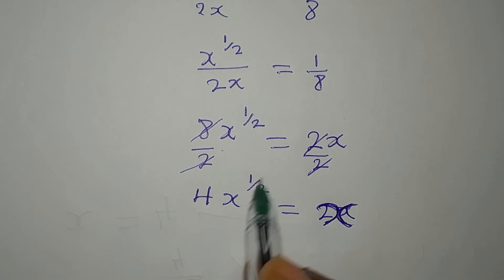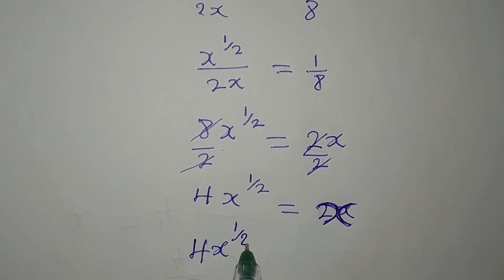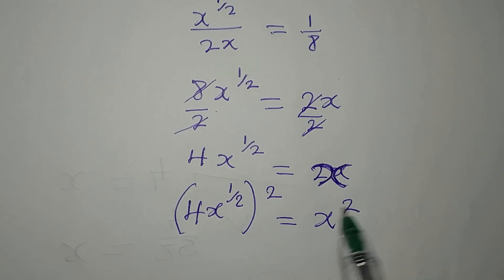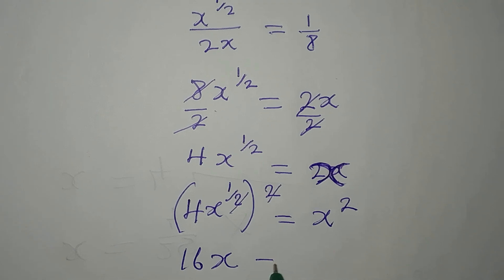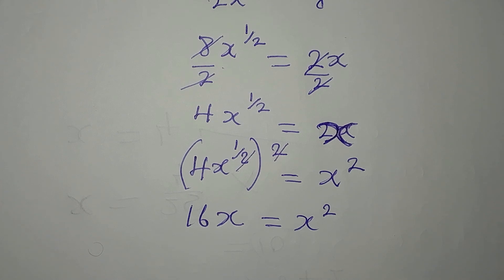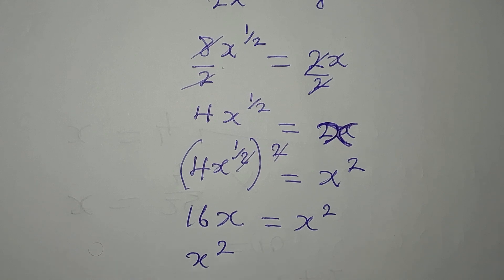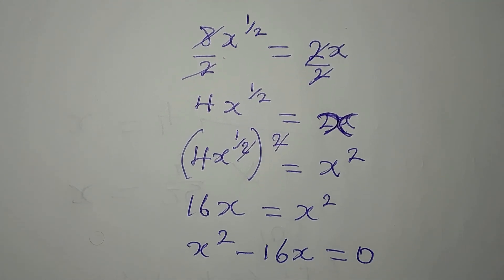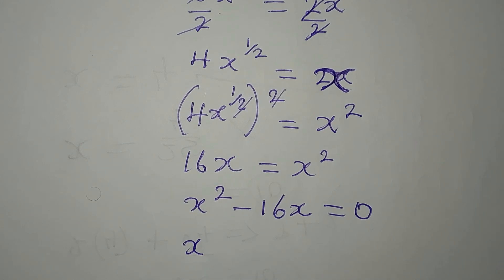We square both sides so that the power of a half will go. We have 4x to the power of 1 over 2, all squared, and on the other side we have x squared. 4 squared is 16, so we have 16x equals x squared. The highest power comes first, so we write x squared minus 16x equals zero.